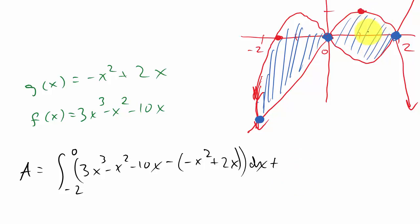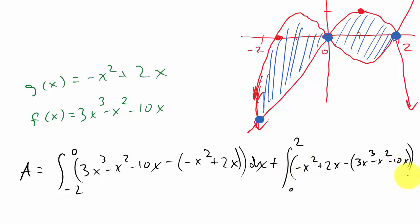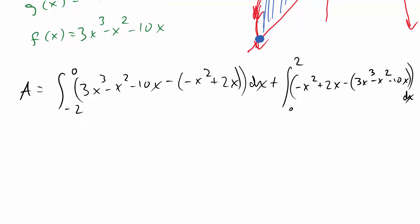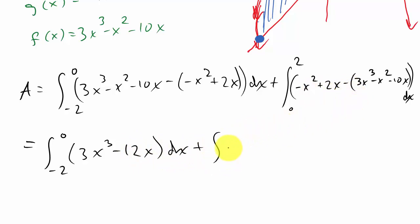Then we add the second integral from 0 to 2, where g of x is on top. So we integrate (negative x squared plus 2x) minus (3x cubed minus x squared minus 10x) dx. Combining like terms, the first integral simplifies to the integral from negative 2 to 0 of (3x cubed minus 12x) dx, and the second becomes the integral from 0 to 2 of (negative 3x cubed plus 12x) dx.